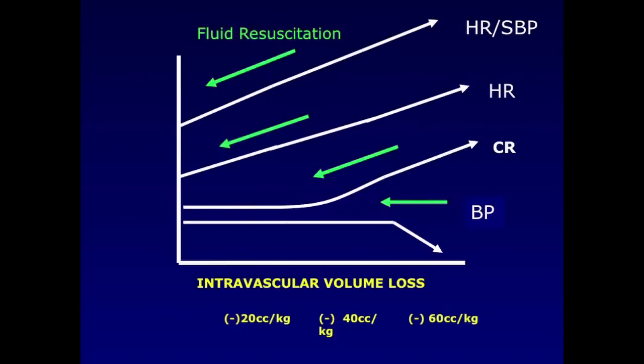As one gives fluid in this case, you can see the shock index, which is the heart rate divided by the systolic blood pressure will improve. The heart rate will improve towards normal. The prolonged capillary refill will go towards normal, and the blood pressure will improve. Now, if you look at this figure carefully, what you see is the blood pressure is the last thing to go. So the first thing you see in your patient is an increase in heart rate, then an increase in the heart rate over systolic blood pressure, then an increase in capillary refill, and finally a decrease in blood pressure. And when you give fluids, you'll see them normalize in that order. So, again, these are signs and symptoms that can be measured by the first responders pretty appropriately just with a blood pressure cuff and their fingers.